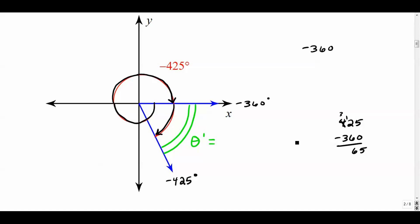To get from negative 425 to 360, you go an additional 65 degrees. Reference angles are always expressed in positive degrees or radians — reference angles are always positive.